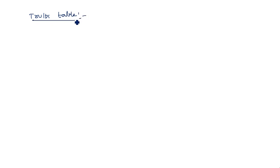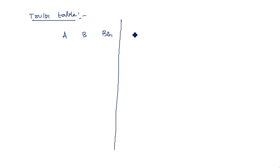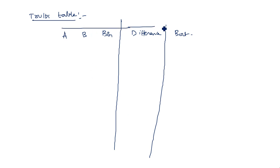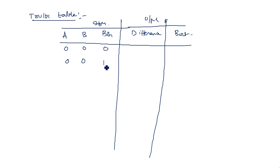The truth table is very important for all logic circuits — without the truth table you cannot even write the expression. So we have inputs A, B, B-in and output set with difference and borrow out. As there are three inputs, eight combinations are there: from triple zero to triple one.